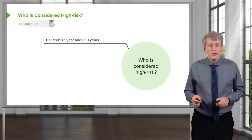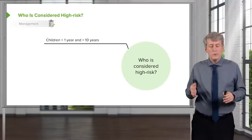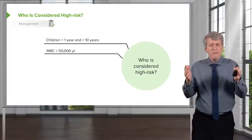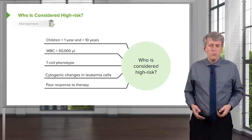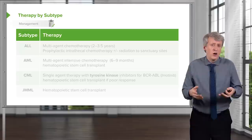Who is at highest risk when they have leukemia? Children more than 10 years or less than 1 year are at higher risk; children between 1 and 10 are at lower risk. If their white count is very high, they're at higher risk. If they have a T cell phenotype, they're at higher risk. If they have cytogenic changes in their leukemia cells, they're at higher risk. And if they're not responding well to therapy, they're at higher risk.